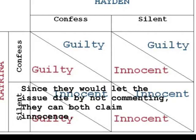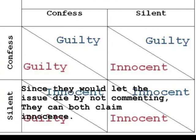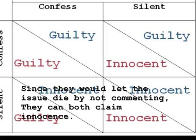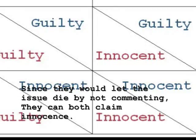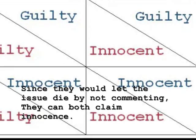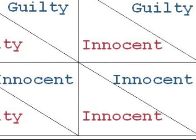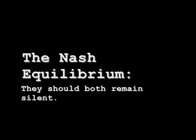Finally, if both of them remain silent and let the issue die by not making any comments about it, they can both claim innocence. For example, the issue with Maricar and Hayden: since Maricar did not make a big deal about it and stayed quiet, Hayden doing the same, Maricar continued her career and the only ongoing issue was with Katrina and Hayden. The Nash equilibrium is if they both remain silent, because they could both claim to be innocent and, with people not knowing the truth, they are both better off.